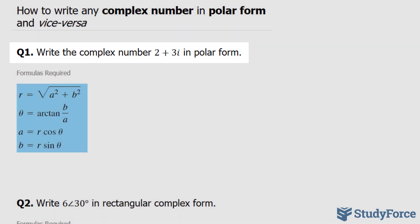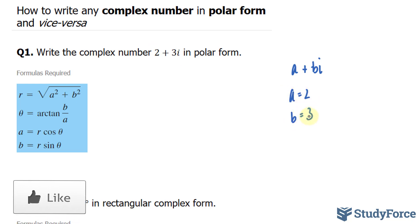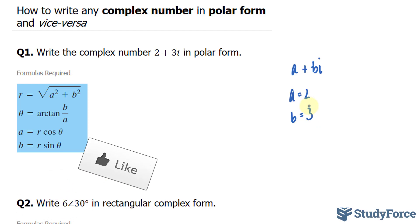The first thing I want to do is identify my a and b terms, because every complex number has the format a plus bi, where a and b are real numbers and b is multiplied to the imaginary unit i. In the number they've given us, 2 plus 3i, our a value is 2 and our b value is 3. I'm identifying a and b because according to these formulas, everything is in terms of a, b, r, and theta. I want to use two of these formulas to go from a and b to r and theta.